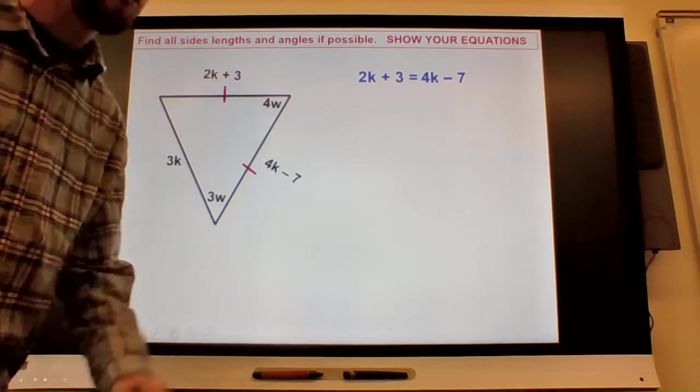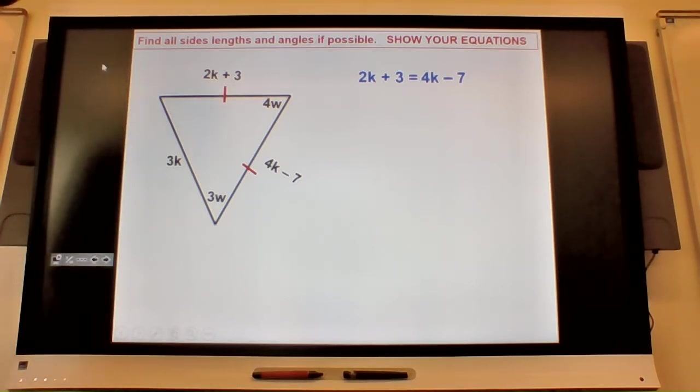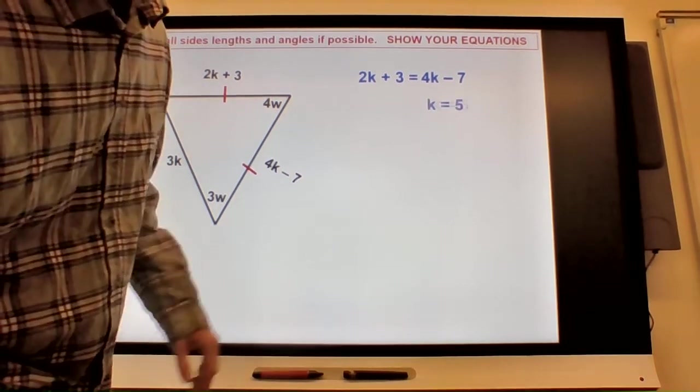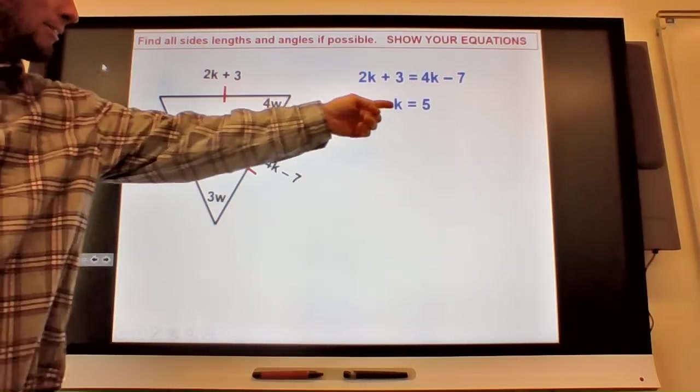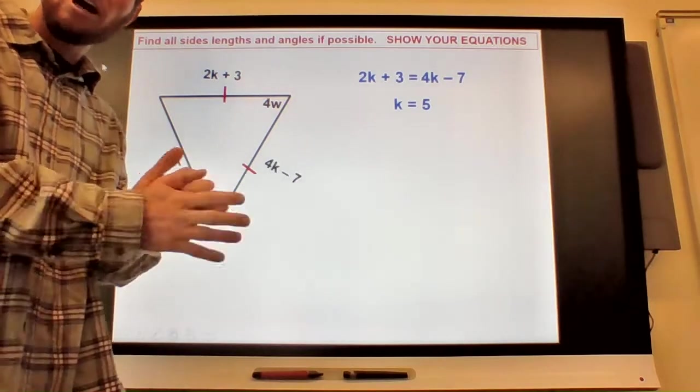You also subtract the 2k. What's 4k minus 2k? Oh my gosh. All right, you keep going, you get k equals... Oh my gosh, you get k equals 5. Hopefully you got that as an answer.